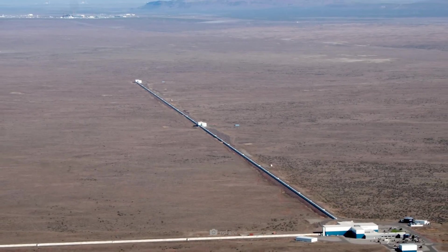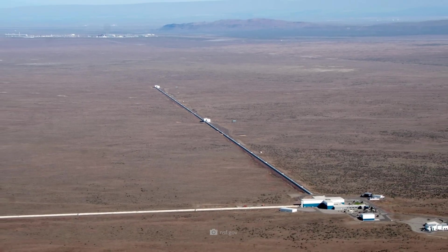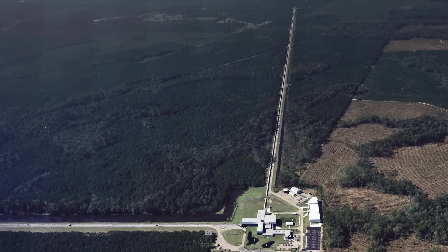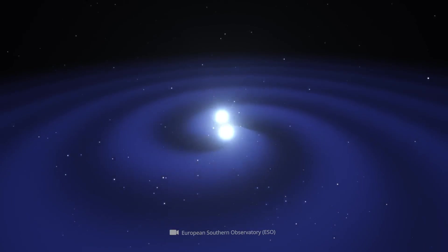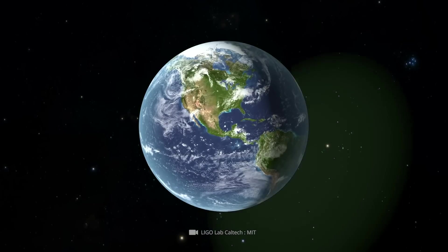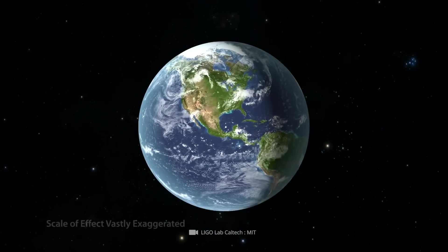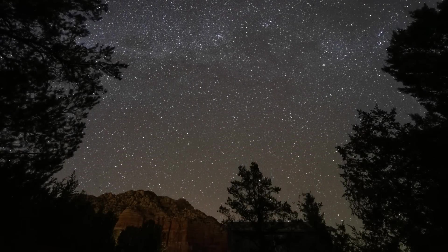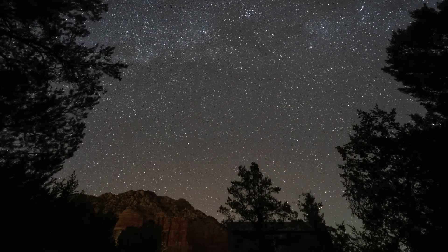The LIGO project consists of two detectors, one in Hanford, Washington, and one in Livingston, Louisiana. The laser beams travel with arms four kilometers long each. Gravitational waves emitted infinitely far away from us in the cosmos can be registered within these measurement arms by the shifts they cause in the space-time fabric.